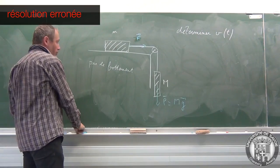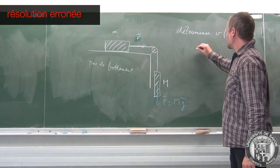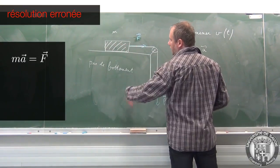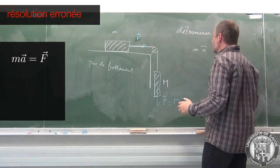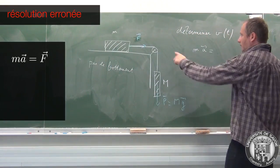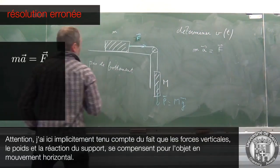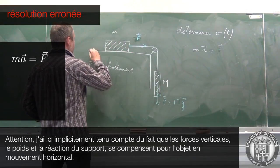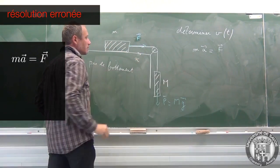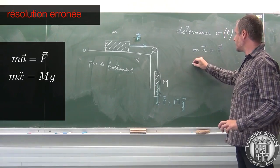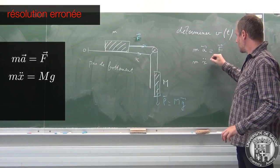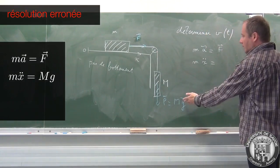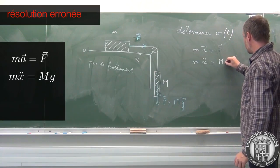Une fois qu'on a écrit ça, la résolution du problème est vraiment très simple. J'ai écrit la relation fondamentale de la dynamique appliquée à ce système-là. Je me place dans un référentiel lié au support ici, et on écrit que Ma = F. Si je projette cette relation sur un axe horizontal X, la coordonnée suivant X de l'accélération, c'est ẍ, est égale à F, et ici la force a une composante positive suivant l'axe X, et ça vaudrait mg.